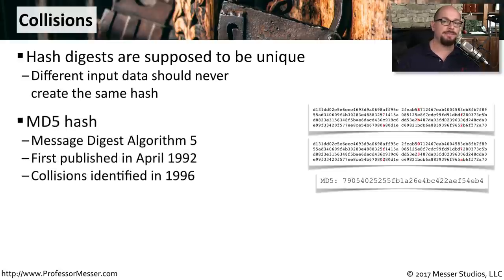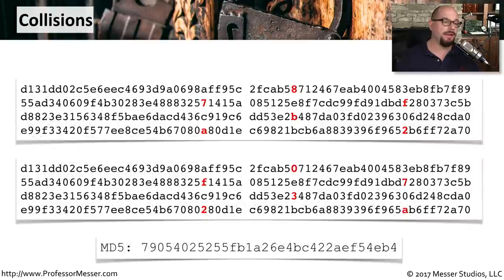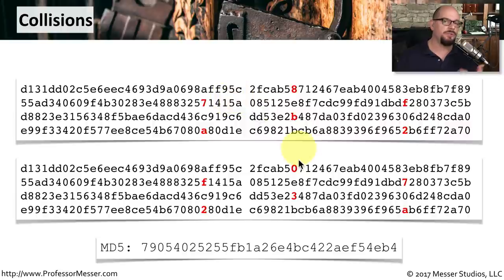Cryptographers found a hash collision in the MD5 algorithm — that's the Message Digest algorithm 5, published in April 1992 — and they found the first collision in 1996. By 2008, researchers were able to create a certificate authority that appeared to be legitimate because the hash was correct, but in reality it was a certificate they created themselves and was not signed by a trusted certificate authority. This is an example of an MD5 collision. We have some plain text at the top and plain text at the bottom — these are almost identical, but a number of items are different, marked in red with bold. Those are supposed to give you two completely different hashes, but as you can see, the MD5 hash for both is identical — and that's a hash collision.